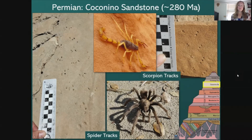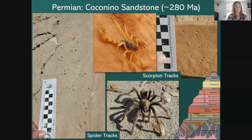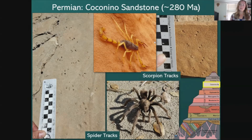In addition, we also find invertebrate tracks in the Coconino Sandstone, such as spider tracks on the left and scorpion tracks on the right. The spider tracks are little divots in the sediment with groupings of four on each side, representing the four legs on each side of the spider. The scorpion tracks show three little divots at a v-shaped angle on either side, representing just three legs on either side of the scorpion walking at that particular angle.